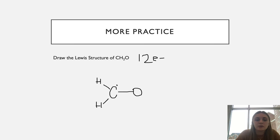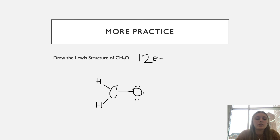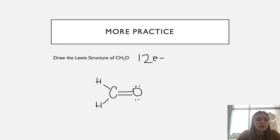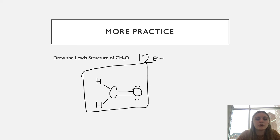Oxygen starts out with six valence electrons; one is bonded, so it has five remaining. We can see that neither carbon nor oxygen has a full octet, but each has one unpaired electron. With those two electrons we can create a double bond between carbon and oxygen, completing the Lewis structure for CH2O.